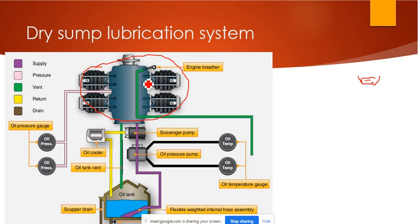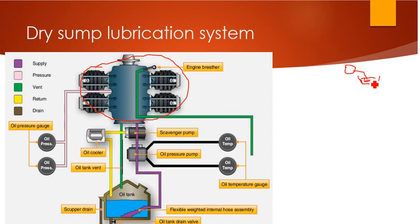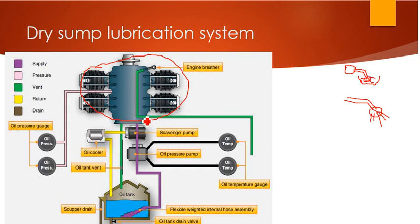The engine parts get cooled, and after cooling the engine parts the oil moves towards the sump. Here we have the oil tank, also called a sump. From the sump, the scavenger pump sucks the oil through a pipe connection. The oil gets sucked into the scavenger region and moves on to the reservoir, and then after getting filtered and cooled it moves to the engine part.